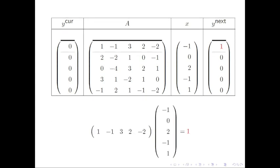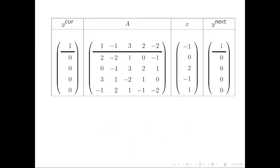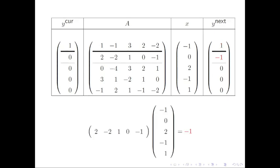We identify the first row and perform a dot product with x to compute the first component of y. Then we identify the second row and perform a dot product, and so forth.